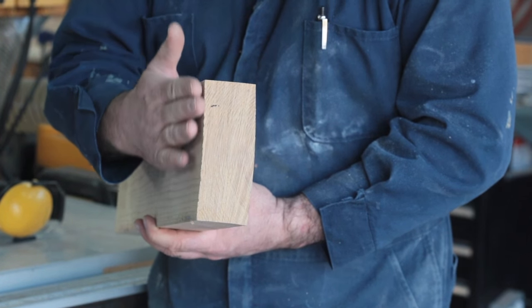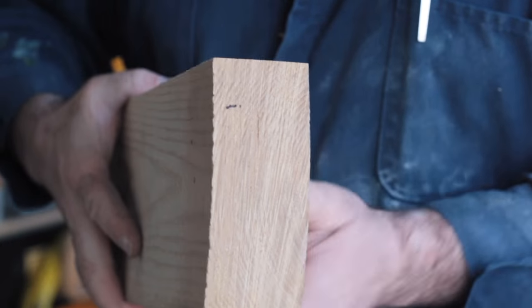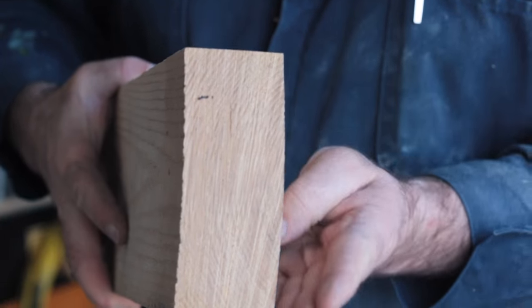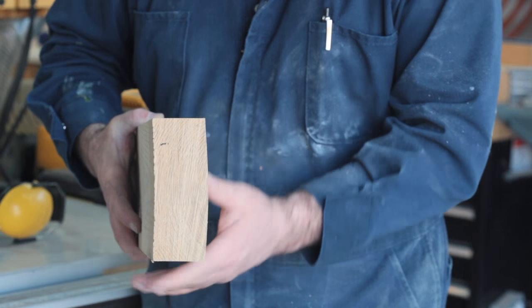You can see how this piece is concave on one side and it's convex on the other. This is fairly common. The lumber would have been sawn flat but developed this shape as it dried.